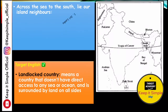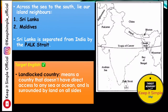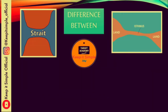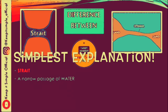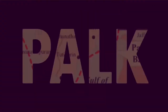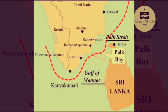India also has neighbors across the water. To the south, across the sea, our island neighbors are Sri Lanka and Maldives. Between India and Sri Lanka lies a very important strait called the Palk Strait — spelled P-A-L-K. A strait is a water body that separates two landmasses. So India and Sri Lanka are separated by the Palk Strait.